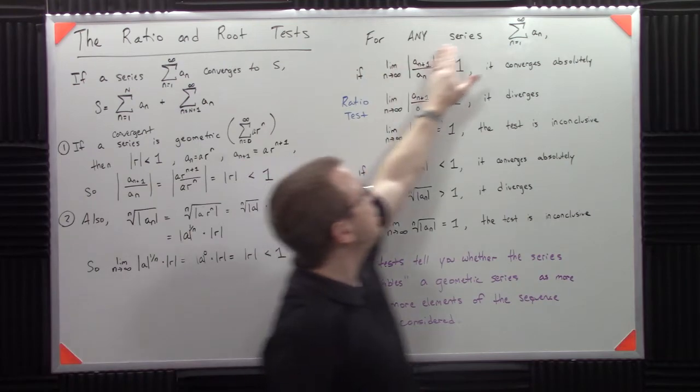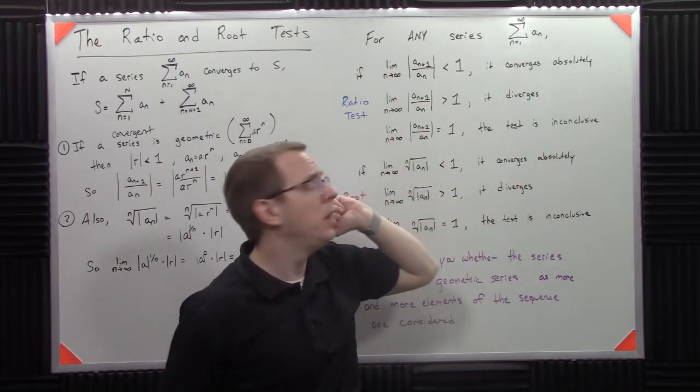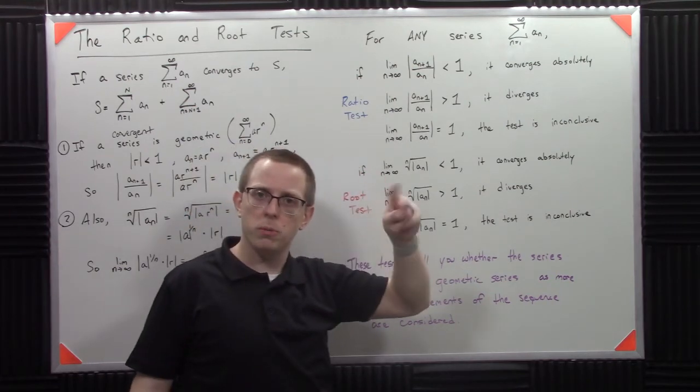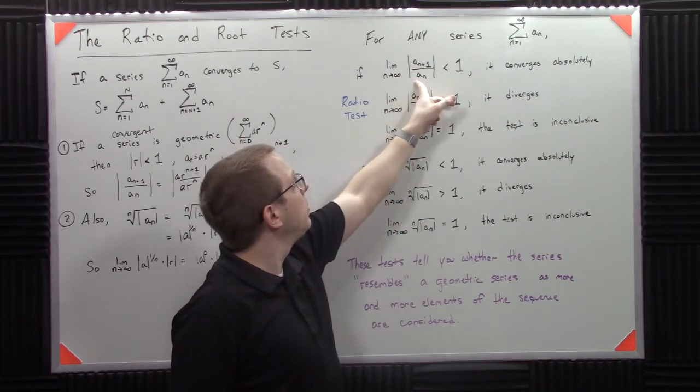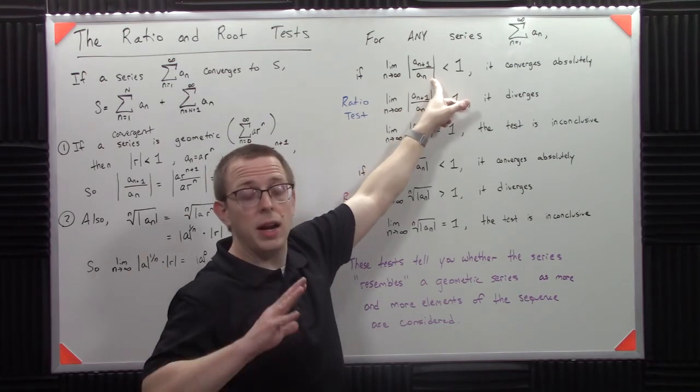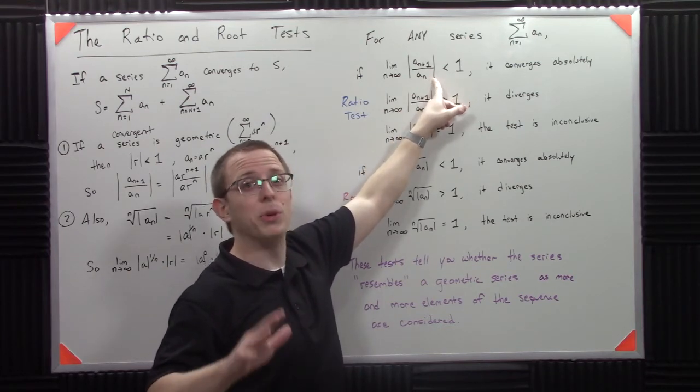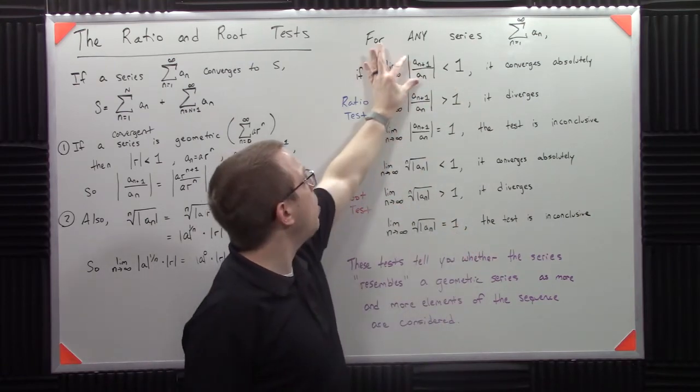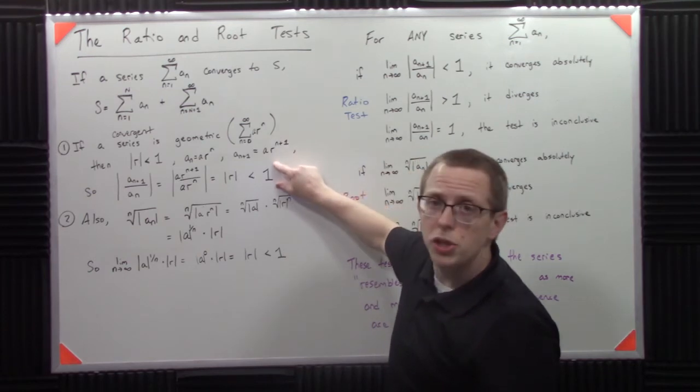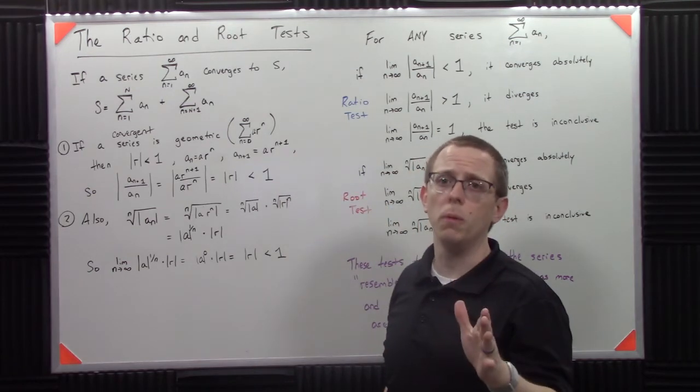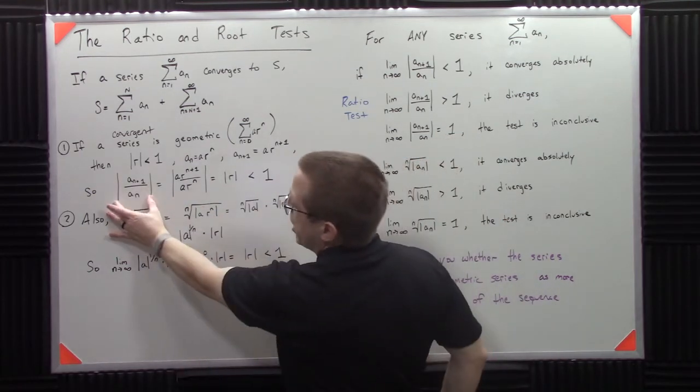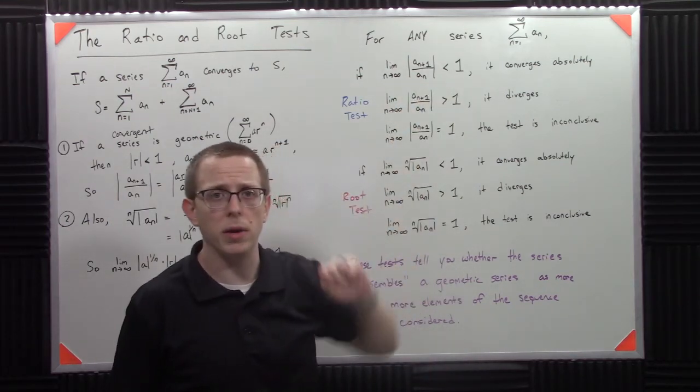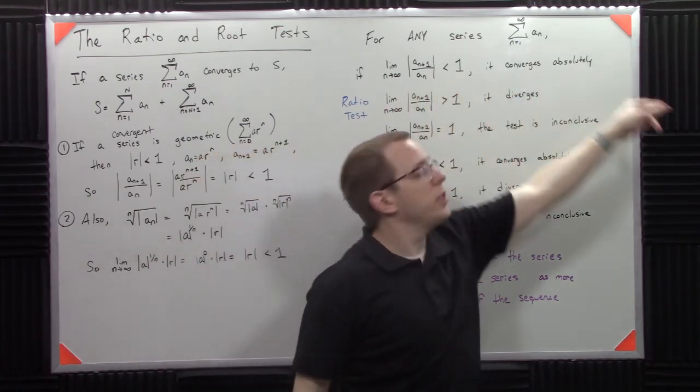The ratio test says for any series, doesn't matter, any series you pick, if I take the limit of the ratio of those terms as time goes on, if I get that the limit, not at the beginning, not in general, but the limit of the ratio of those terms ends up less than 1, what that tells me is it kind of looks like a geometric series long term. Long term, that ratio is less than 1. That tells me it's going to converge absolutely.